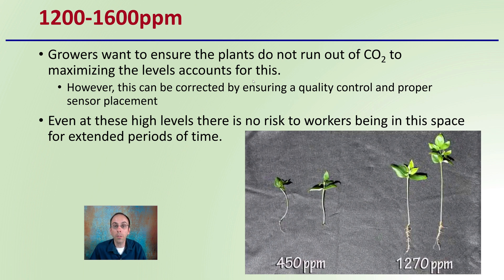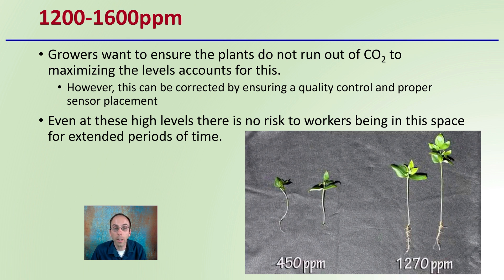At 1,200 to 1,600 parts per million, growers want to ensure the plants do not run out of carbon dioxide to maximize levels. This can be addressed by ensuring a quality controller and proper sensor placement, so there's no chance the plants will run out — maximizing the levels will ensure they're not going to be carbon dioxide deficient.